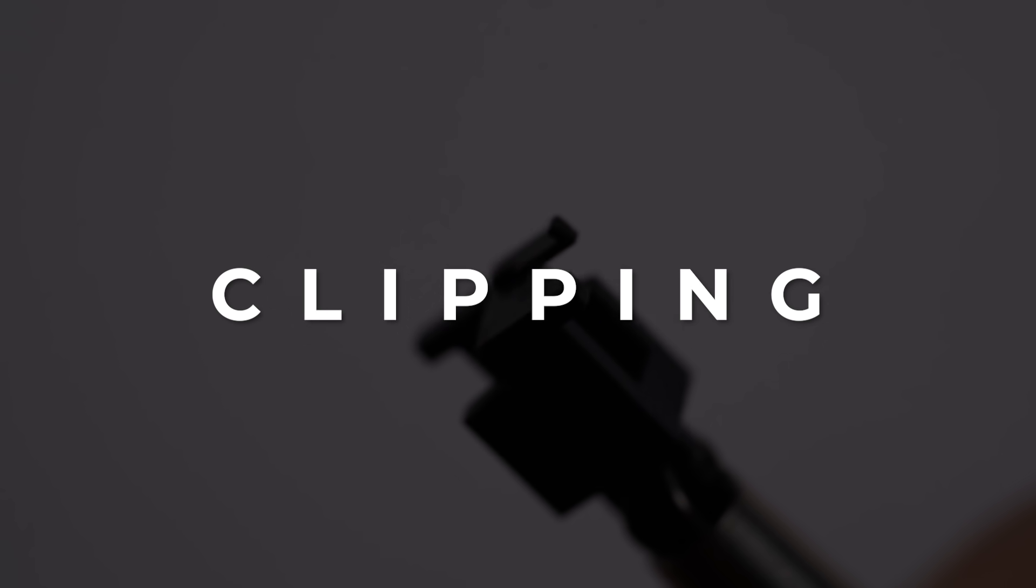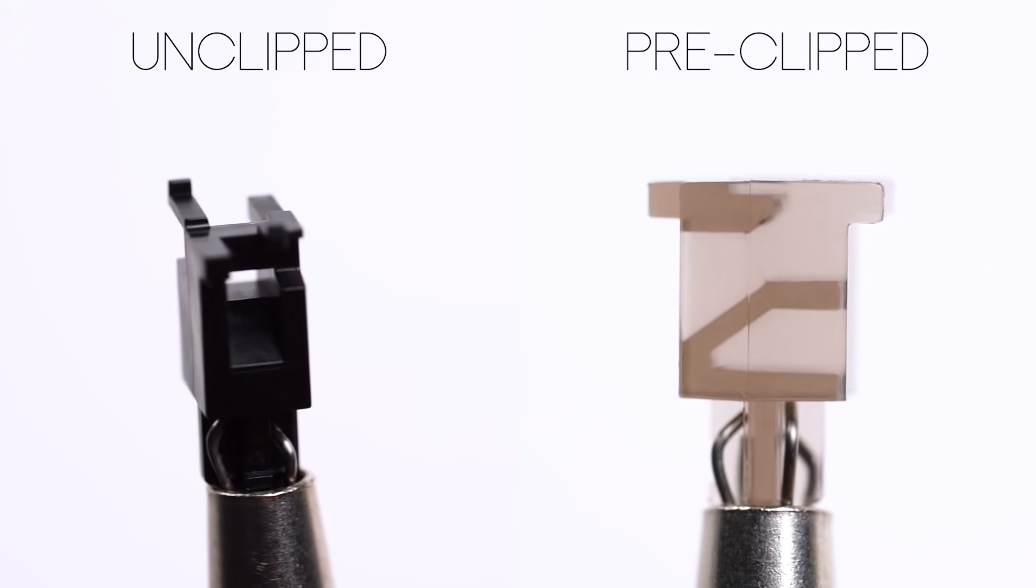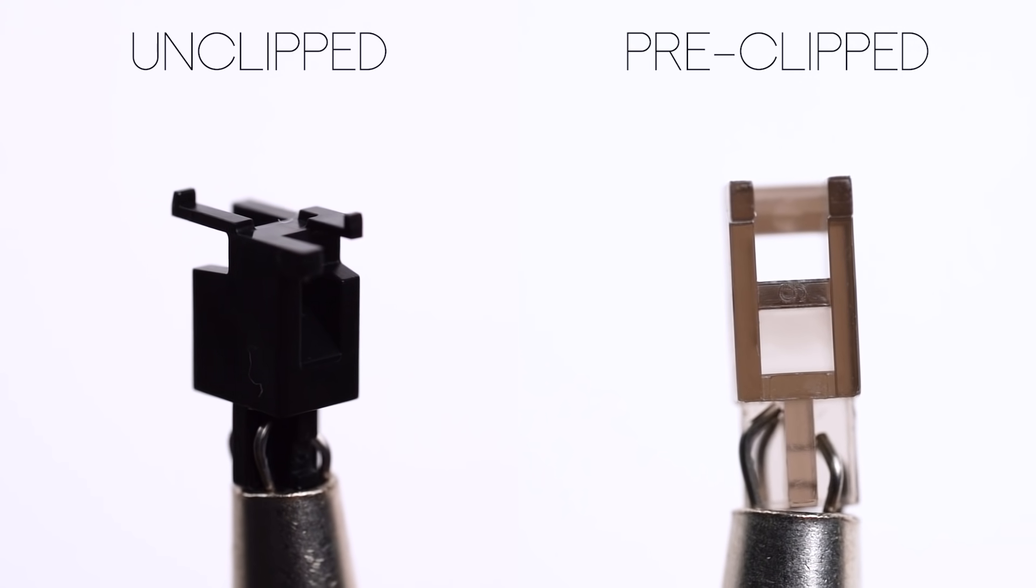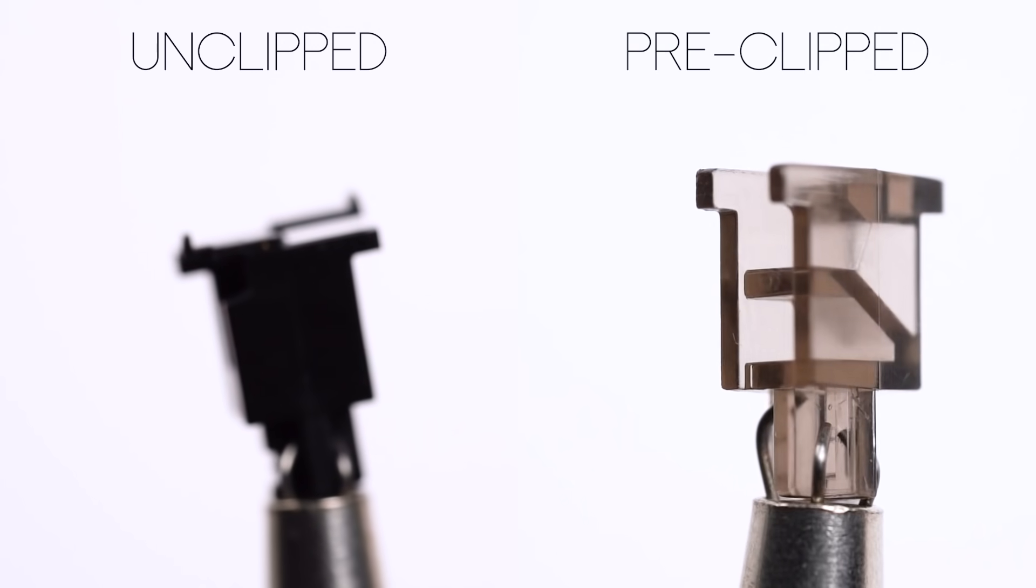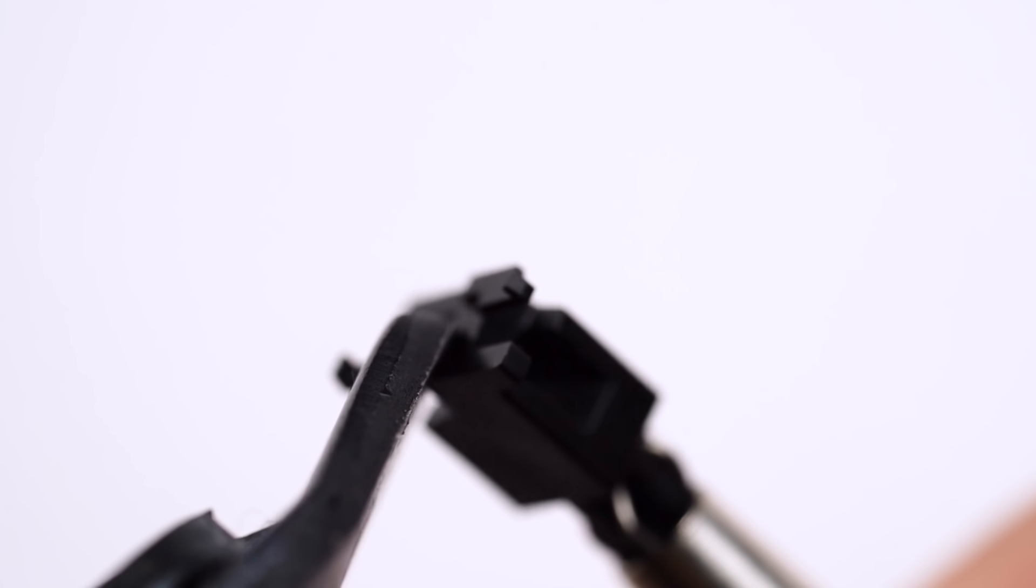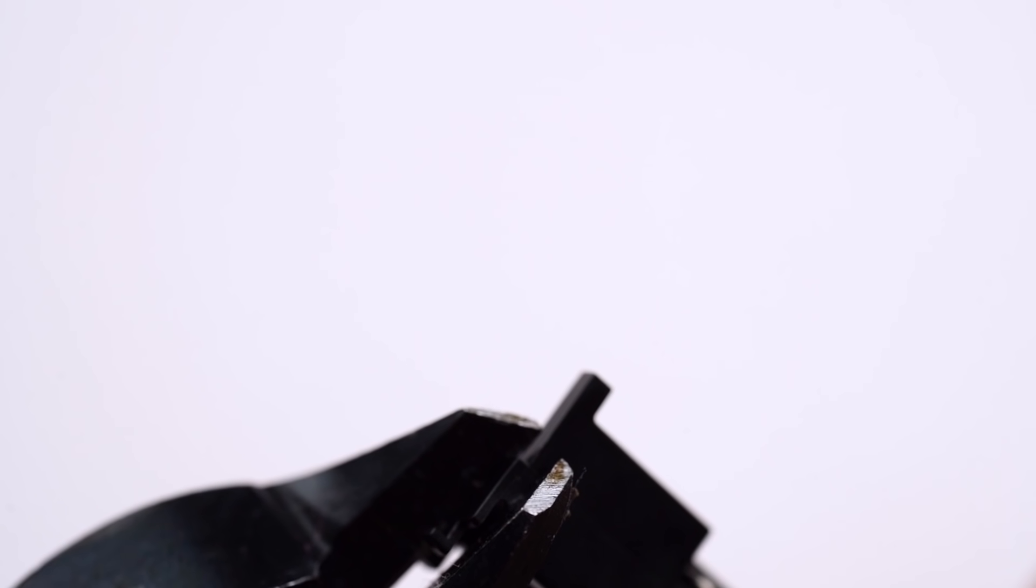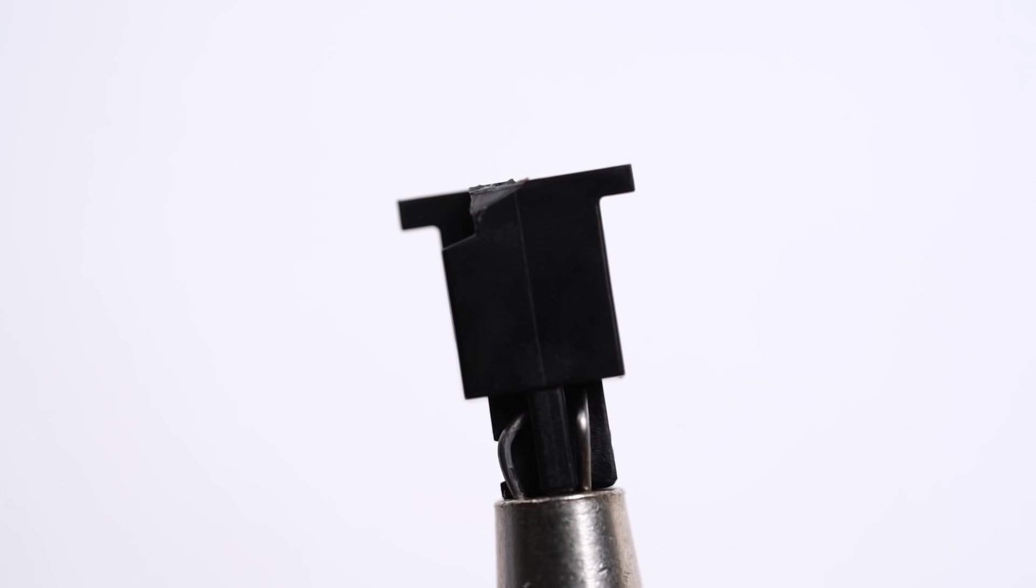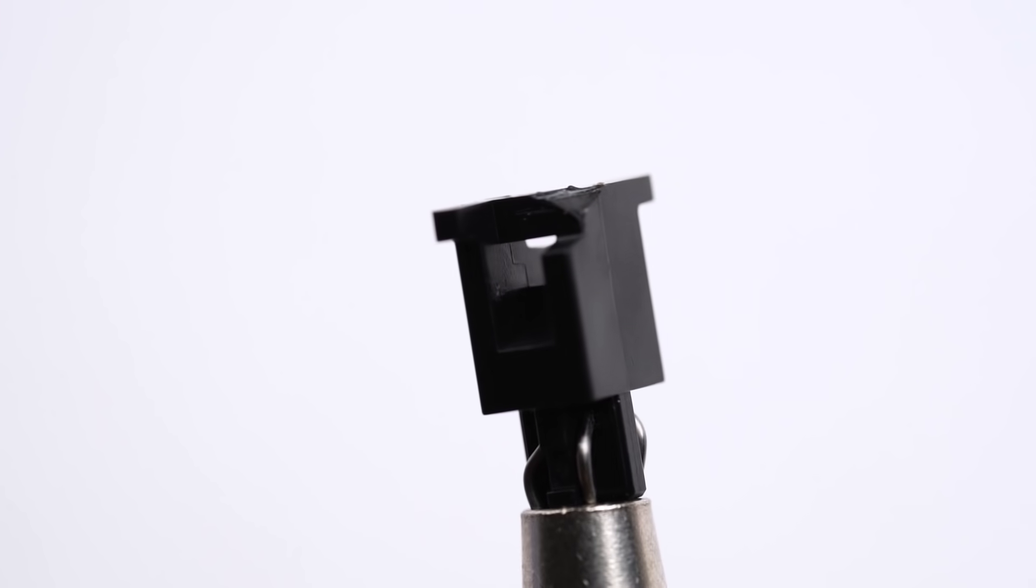So next up, depending on the stabilizer, you may have to clip them. Unclipped stabilizer stems will look like this. They have these two extra legs on the bottom, which will make the stabilizers feel a little mushy, which is not what you want. So get your plastic clippers or scissors and cut off the two extra legs. You want to make sure that you cut off the entire leg so that the bottom of the stabilizer is completely flat. Try to avoid having any uneven plastic on the bottom of your stabilizers for a cleaner sound and feel.